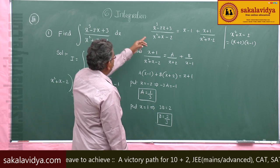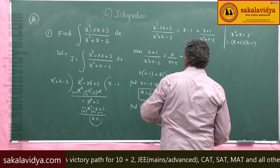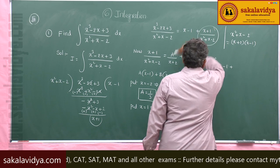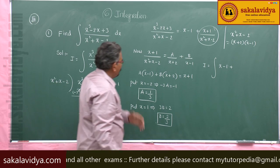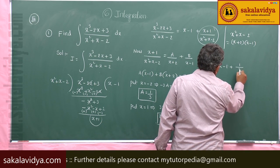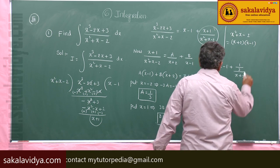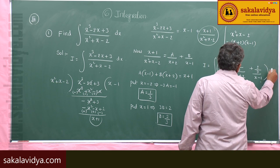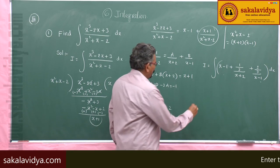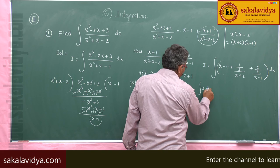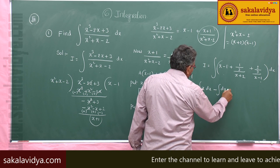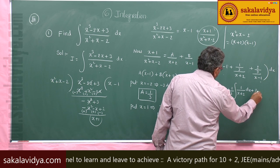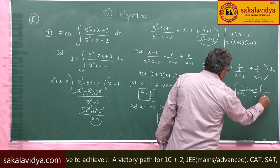Now the integral I can be written as: integral of (x − 1) plus the partial fractions — (1/3)/(x + 2) plus (2/3)/(x − 1) — all times dx. This can be easily integrated: integral of x dx minus integral of 1 dx, plus (1/3) times integral of 1/(x + 2) dx, plus (2/3) times integral of 1/(x − 1) dx.